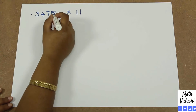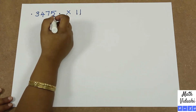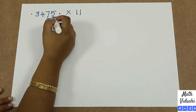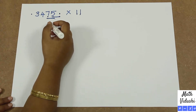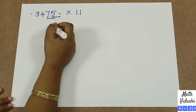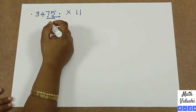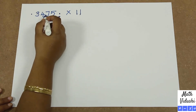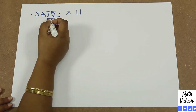Now how do you add? You have 0 plus 5, that is 5. Then you have 7 plus 5 which is 12. Now 12 has a carryover of 1 — it is more than 9. So how do you handle that? You write 2 here and then put a 1 in between these numbers.